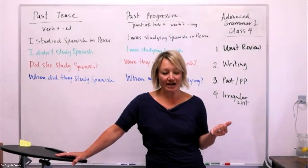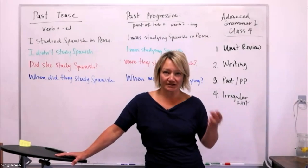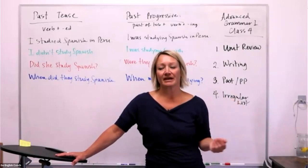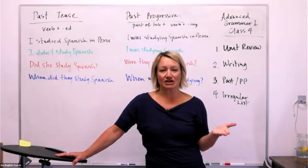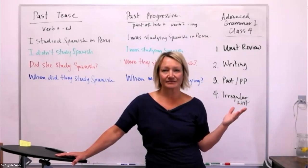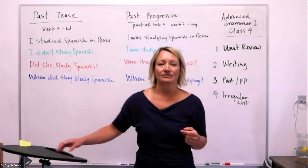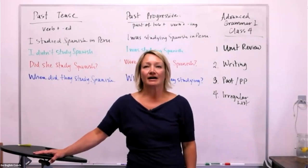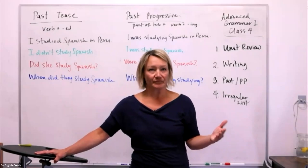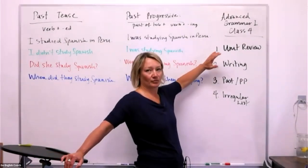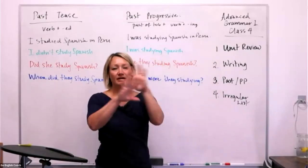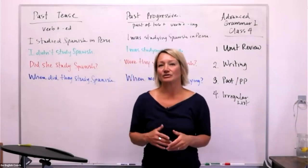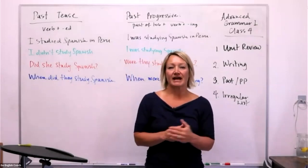Last week we were looking at present tense and present progressive — we did some work comparing the two and talking about when we use them. We talked about spelling changes with verbs using 'es' and 's,' pronunciation of some of those sounds, and participle spellings with 'ing,' including some irregular forms. Now we're going to do a little review on that unit and then jump into past tense and past progressive.